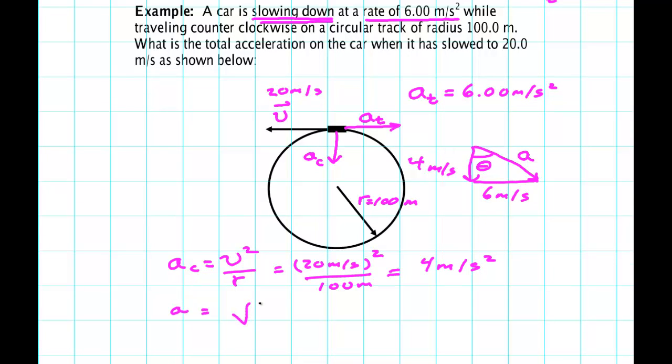AC squared plus AT squared: 4 meters per second squared, I need to square that and add that to 6 meters per second squared. So the acceleration is 7 point - let's see, square root of 52, a little bit more than 7. Punch my calculator and I get 7.21 meters per second squared.